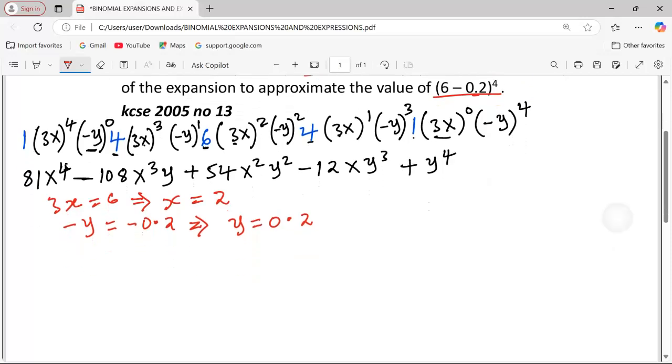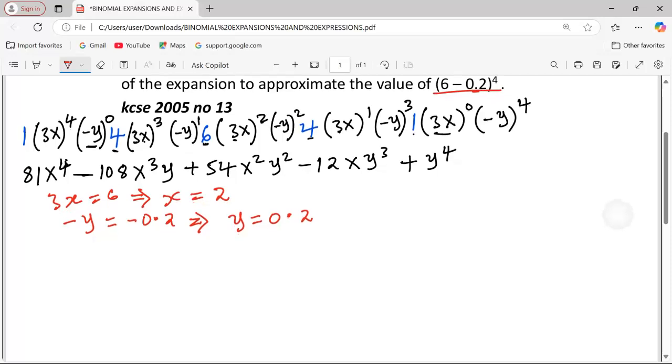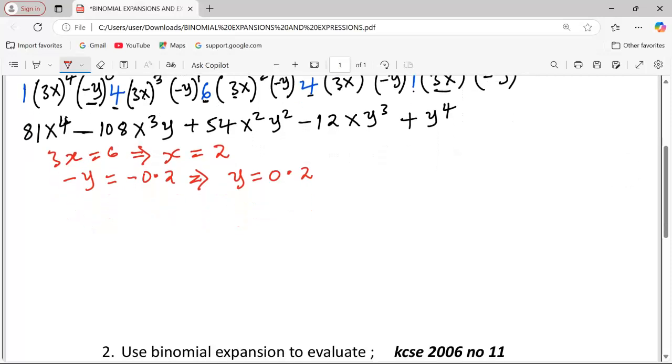Now, we are going to substitute x with 2 and 0.2 where there is y. We are using only the first three terms, according to the instructions. So, I will be picking 81 times 2^4, minus 108 times 2^3, multiplied by 0.2. Then, finally, I add 54 times 2^2 times 0.2^2.